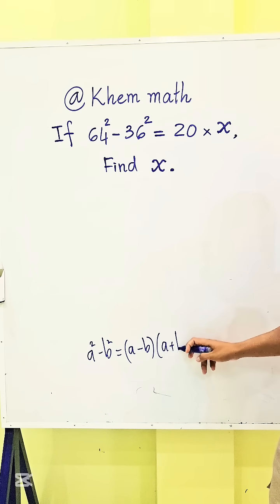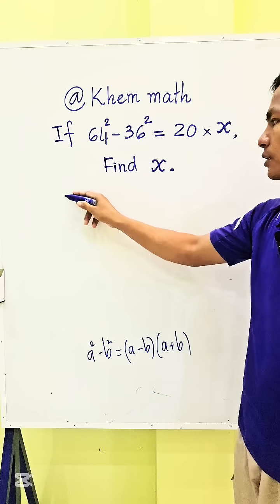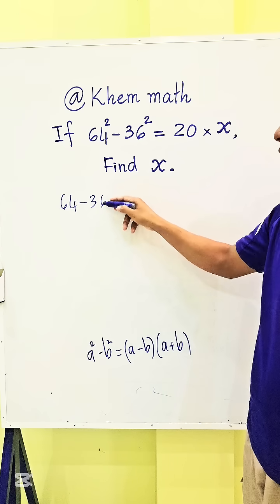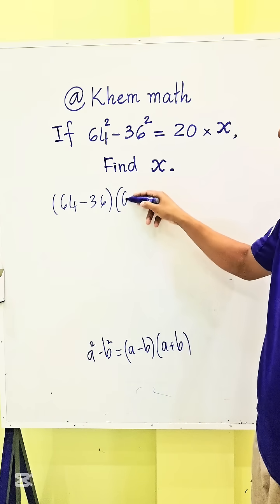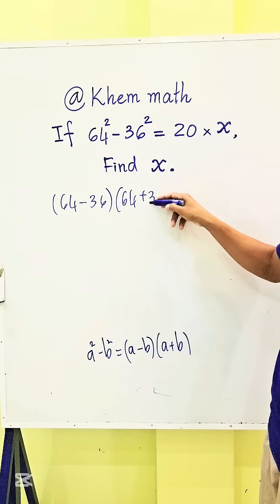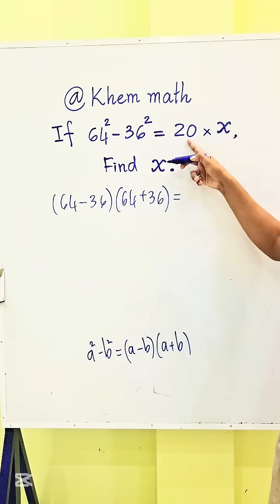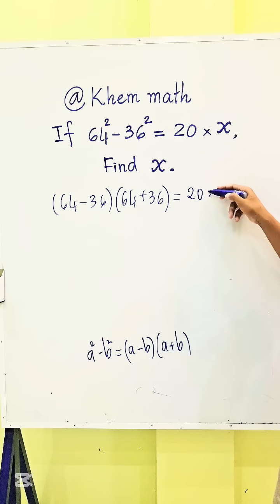So here we get 64 minus 36 times 64 plus 36, and that equals 20 times x.